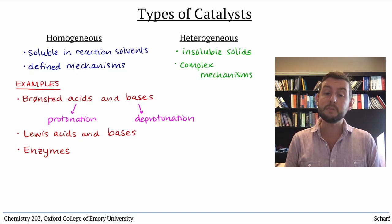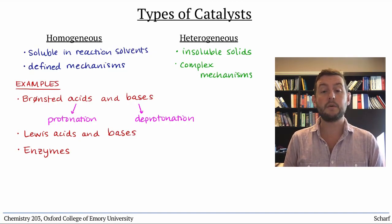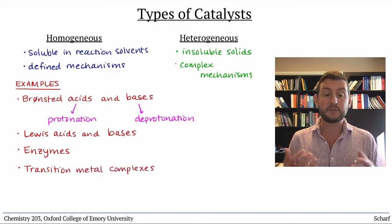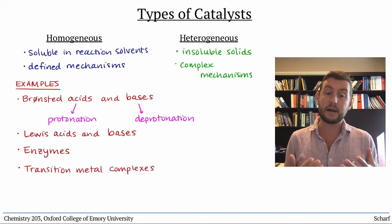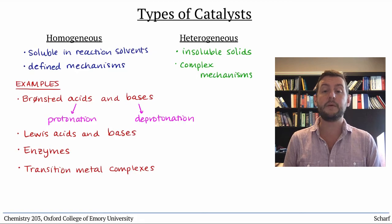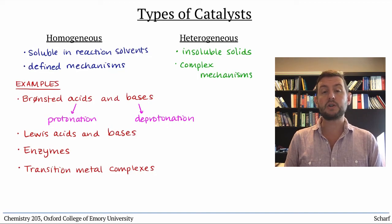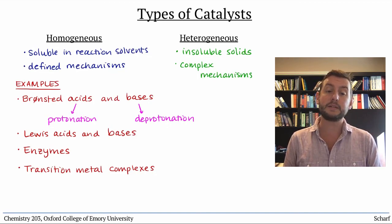One of the most important classes of homogeneous catalysts are transition metal complexes. These compounds have transition metal ions from the D block of the periodic table bonded to a number of ligands. We'll be exploring the structures, properties, and reactivity of these types of complexes over the next several videos.